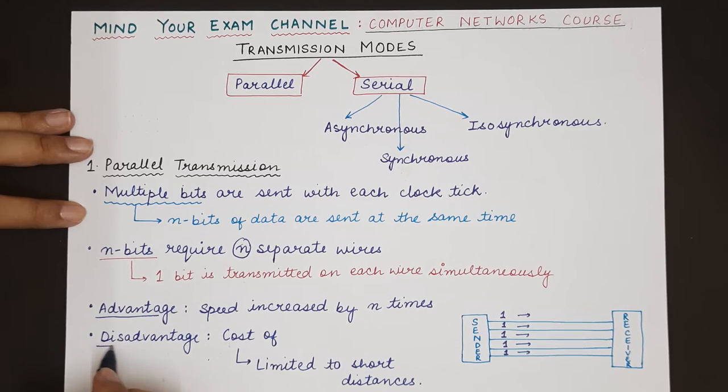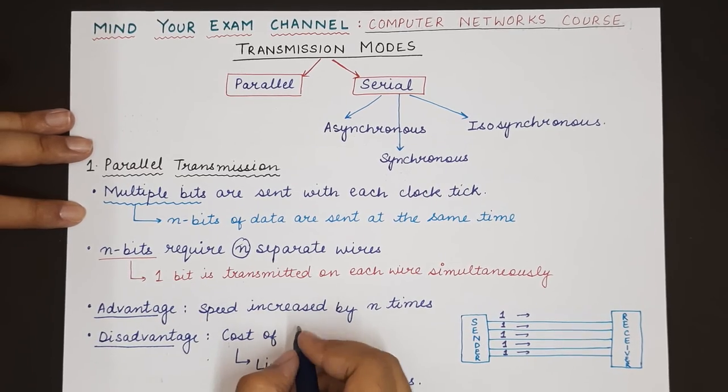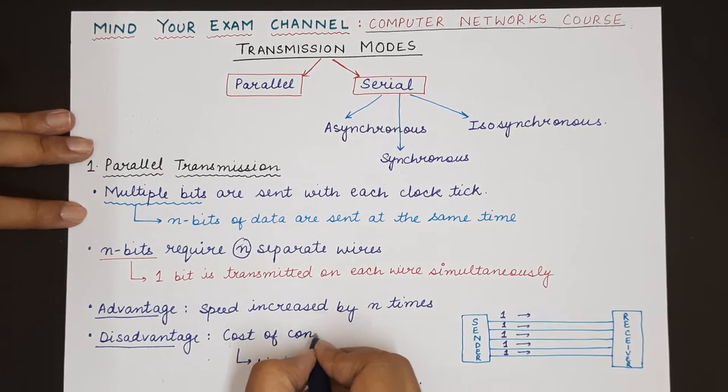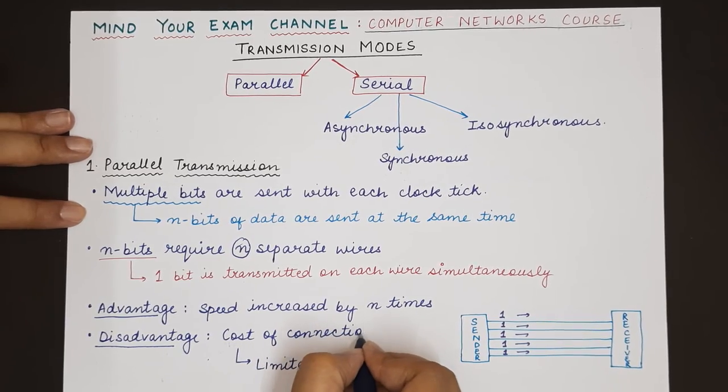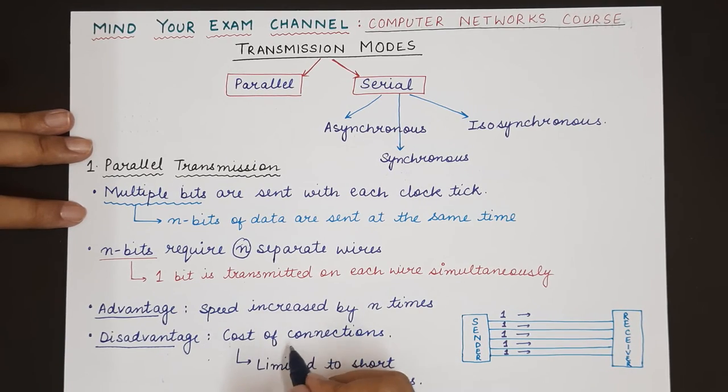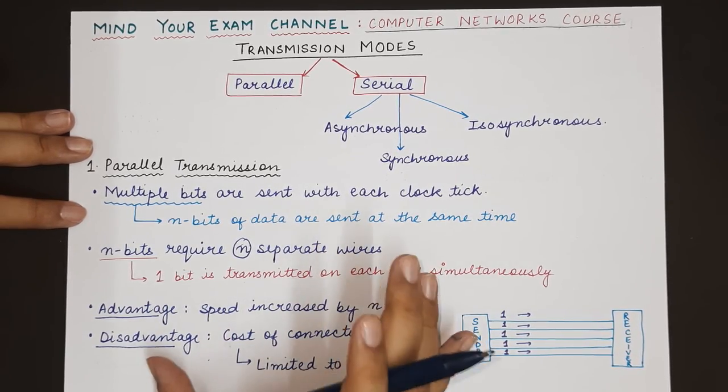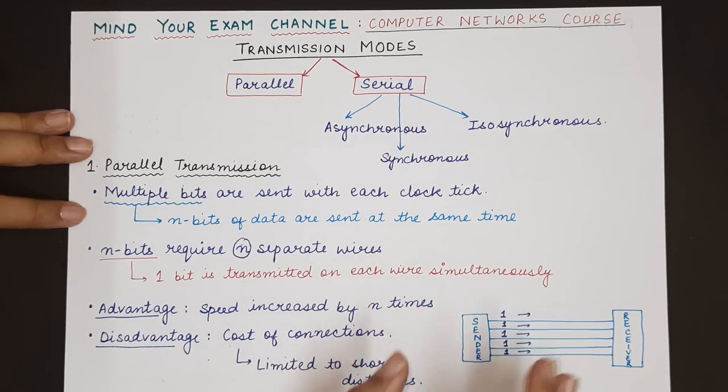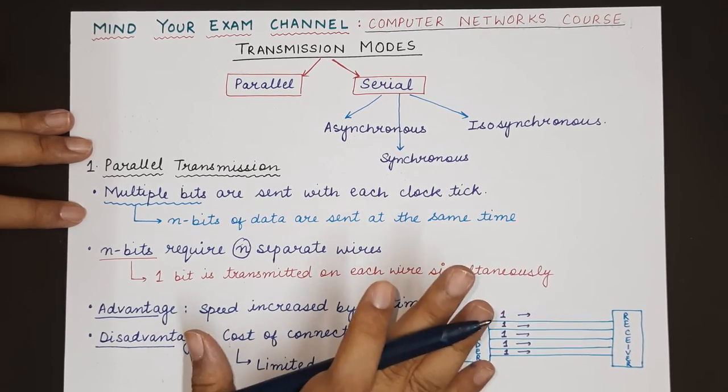The disadvantage of parallel transmission is the cost of connections that are involved. Since we are transmitting multiple bits, multiple wires will be required and the cost increases. That is why parallel transmission is generally used at shorter distances so that the amount of cabling and the cost of cabling is limited.